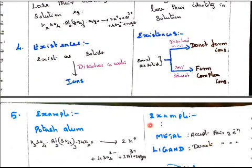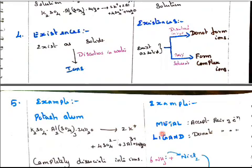So example, potassium alum and here the example we will see this metal as well as the ligand.